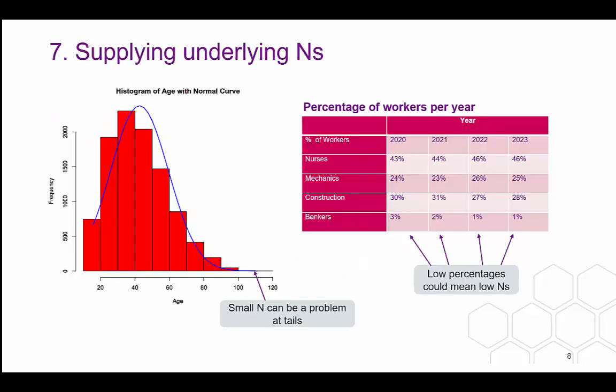To ensure the threshold of 10 is met, we always ask for the unweighted underlying Ns to be supplied. This example shows a histogram and a table, but the requirement for underlying Ns applies to every aspect of an output — regressions, scatter plots, everything. It also applies to medians, minima and maxima, which can often represent a single observation or less than the threshold of 10. If these are not supplied or do not meet the threshold, the output will not be released.